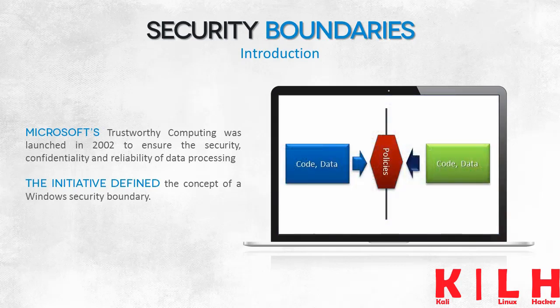The simplest boundary might look like the picture below. A boundary uses rules to separate code and data from other code and other data. If defined in this way, a boundary specifies that code launched on one side of the boundary shouldn't access the code and data of the other side, or that access has to be controlled by an explicitly defined rule.